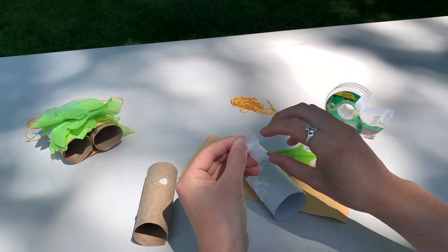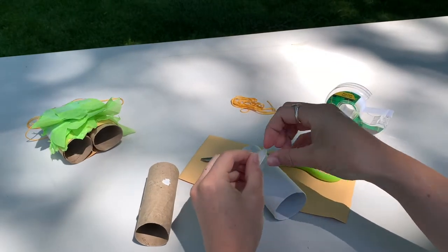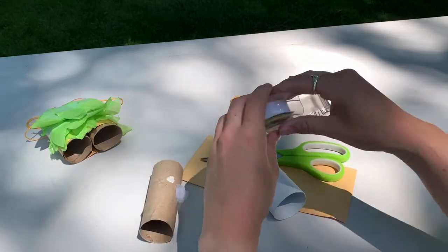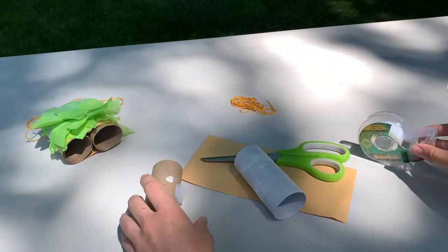So now I'm going to attach both of the toilet paper rolls together with some tape. I didn't have any glue to glue them together.